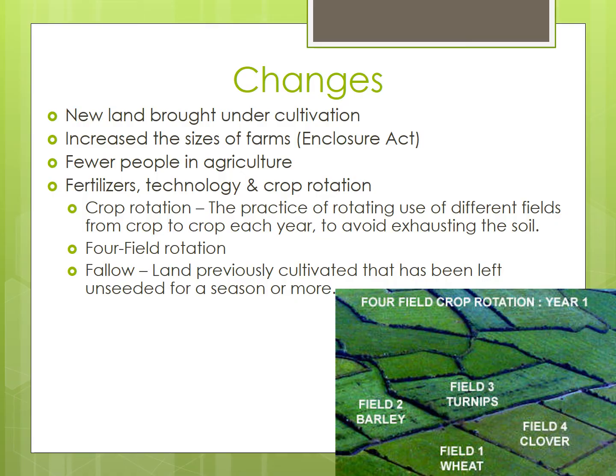Farmers also began to utilize a more sophisticated crop rotation system that increased agricultural output. Crop rotation is the practice of rotating use of different fields from crop to crop each year to avoid exhausting the soil. Crop rotation has existed for hundreds of years, but during the second agricultural revolution, the four-field system emerged.